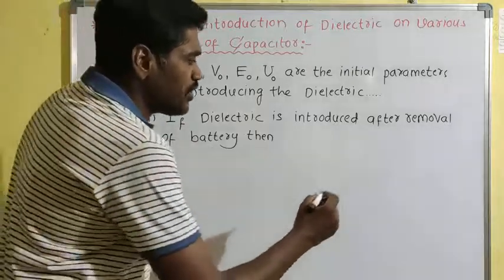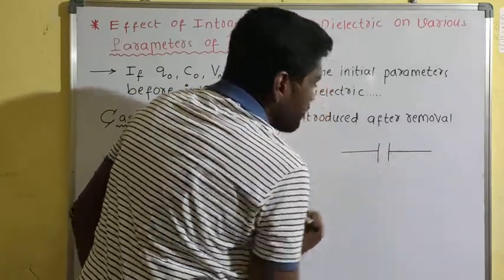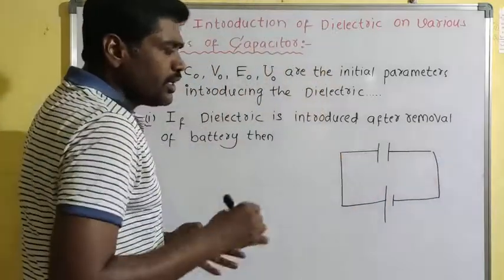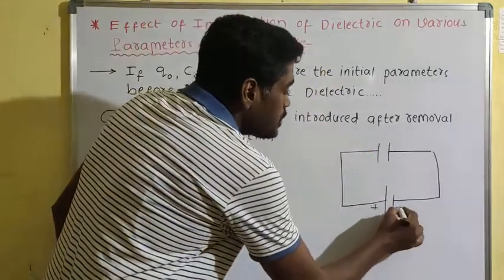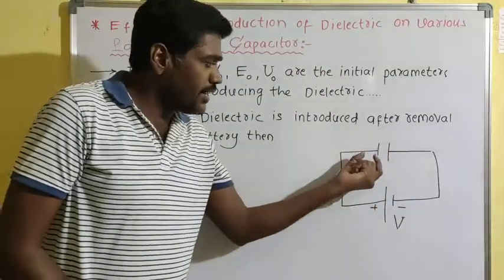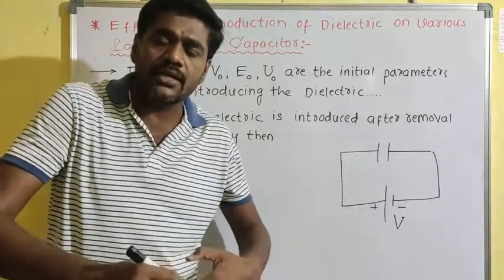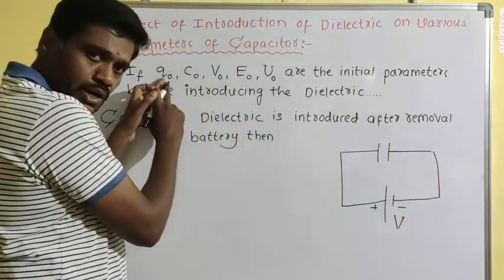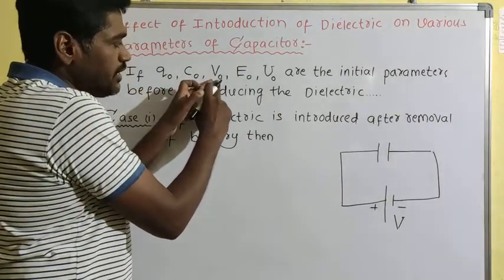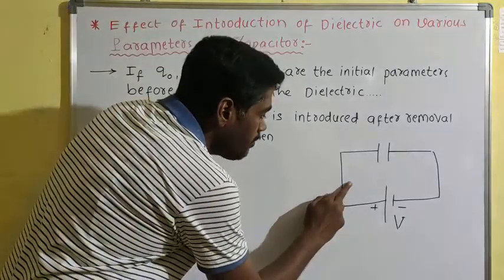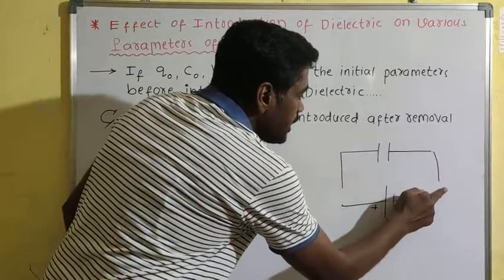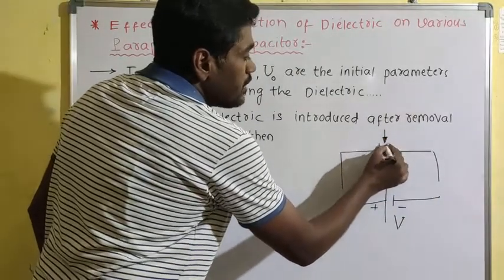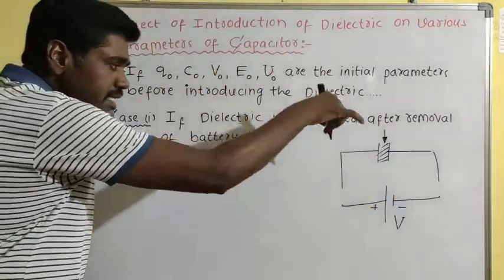For Case 1, take one capacitor connected to a battery. The battery provides some charge to the capacitor — one coulomb, two coulombs — the charge on the plates continuously increases. After the capacitor reaches charge Q₀, capacitance C₀, and voltage V₀, these are the initial values. Now I am removing the battery connection, and then introducing a dielectric material between the plates.